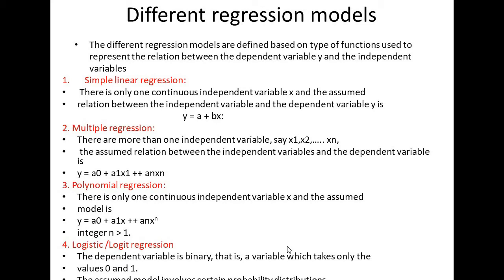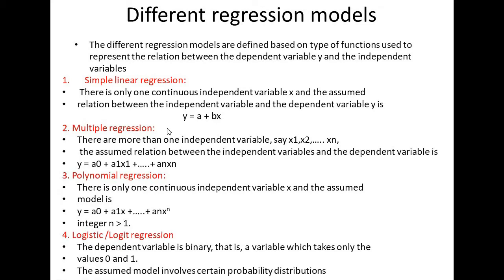The first regression model is simple linear regression. The equation is y is equal to a plus bx. This is a straight line equation. If we choose this regression model, we choose a straight line with one independent variable x and one dependent variable y.